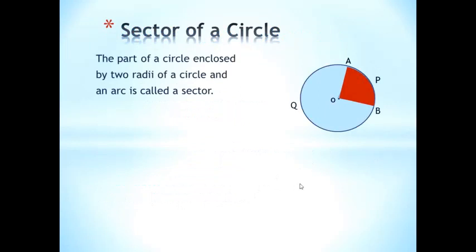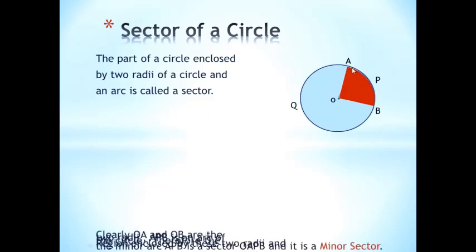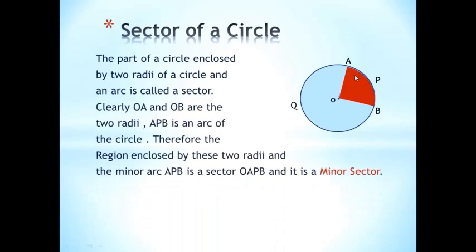Now, the part of the circle. The part of the circle enclosed by two radii — this one OA and OB — these are the two radii, and this arc as we have discussed in the previous slide. This one is arc. So, this one is a sector.